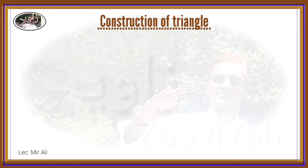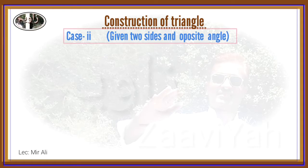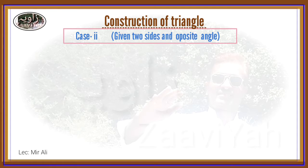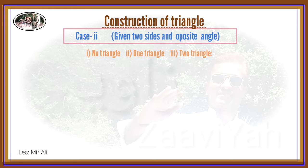Construction of Triangle, Case No. 2: Given two sides and an angle opposite to a side. In this case, there are three possibilities: no triangle can be constructed, one triangle can be constructed, or two triangles can be constructed. These three possibilities will be shown through examples.